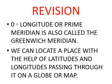Zero degree longitude is called the Prime Meridian and it is also called the Greenwich Meridian. We can locate a place with the help of latitudes and longitudes passing through it on a globe or map. If a latitude and longitude intersect each other on any globe or map, we can easily locate the place at that point.